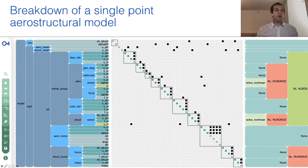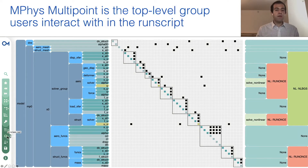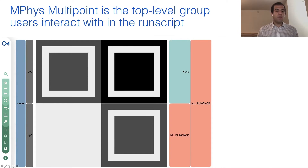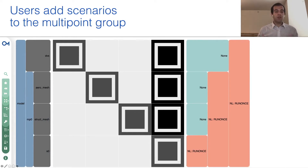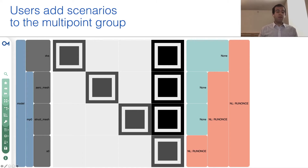Now I'm going to break down a single-point aerostructural model — the simplest model you can do in mPhys that has all the fundamental features. On the top level, if we collapse the whole model, we just have one component for the design variables and one component for the multipoint group. In this example, we have a single multipoint group, but users can add multiple of these. Inside each multipoint group, we have components that are shared across the multipoint group, such as the aerodynamic mesh and the structural mesh. If you want to couple these tools to a geometry module, you can do that at this level. Users add scenarios to represent each flight condition under these multipoint groups — here we have a single scenario S0, but additional scenarios can be added.